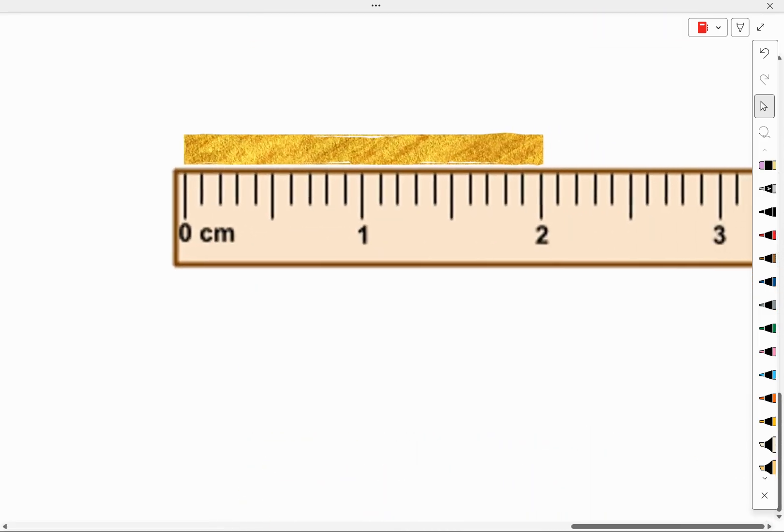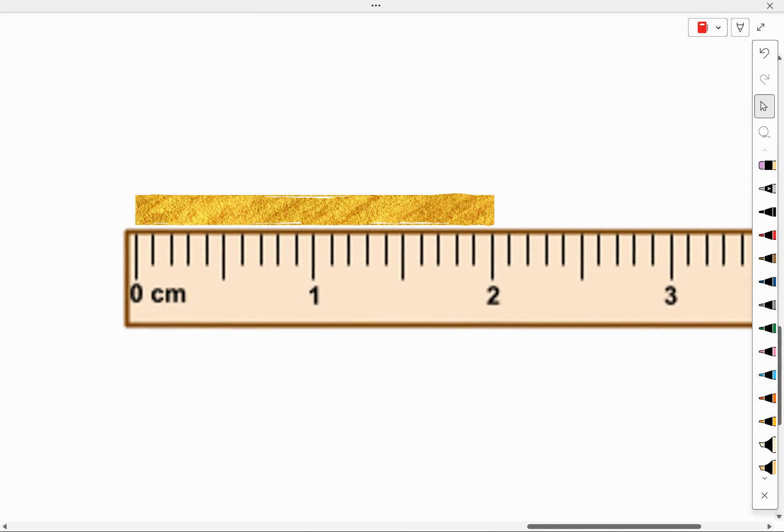So how about this gold object? So the length of this gold object, I can see it's up to the two centimeter mark. But applying that same rule of thumb, we should estimate digits here. Which line is it beyond the two centimeter mark?